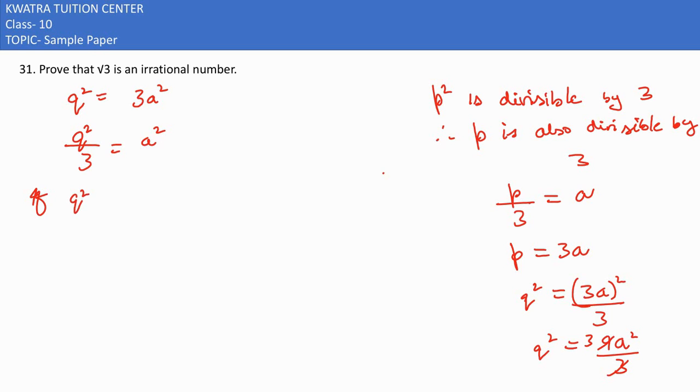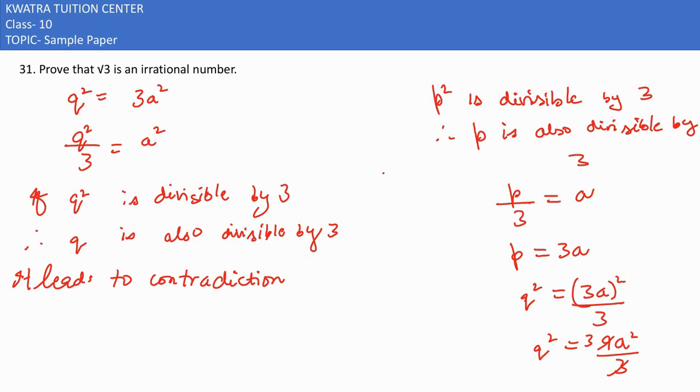If Q² is divisible by 3, I can say Q is also divisible by 3. So both P and Q are divisible by 3, meaning they have common prime factors. This leads to contradiction because we assumed P and Q are coprime, but they are not. Therefore, √3 is an irrational number.